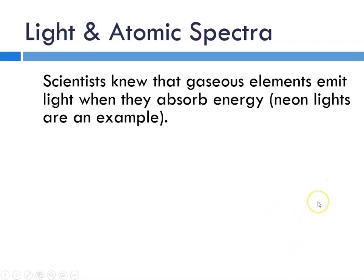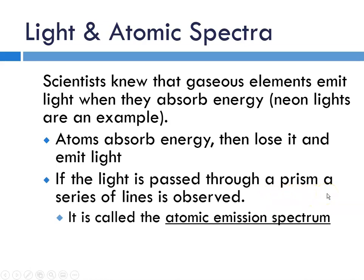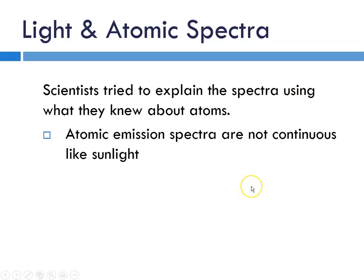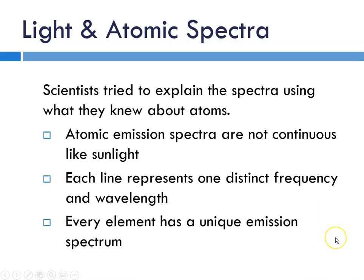Scientists knew that gaseous elements emit light when they absorb energy, and neon lights are an example of that. They figured that atoms are absorbing energy and losing it and emitting light. If the light is passed through a prism, they were able to observe something called an atomic emission spectrum. Scientists in the 1800s were able to observe this and knew that different elements had different spectra. Scientists tried to explain the spectra that they were observing. They observed that the atomic emission spectra are not continuous like sunlight. They have lines, and each line represents a distinct frequency and wavelength. And they knew that every element has a unique emission spectra.